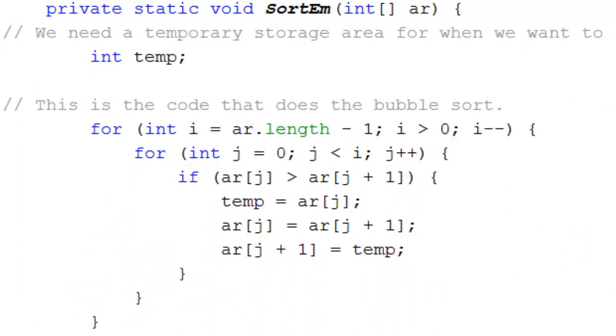And now we get into the complicated bit. We need a temporary storage area. So int temp is going to be where we put things when we want to swap two variables around. Now we get into a loop within a loop.